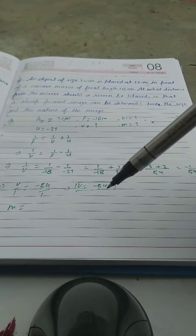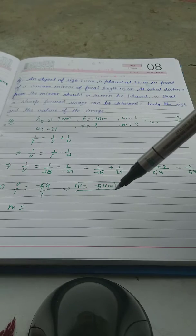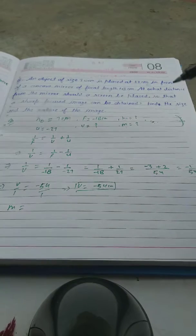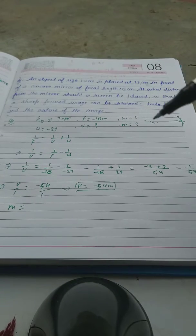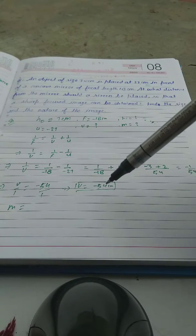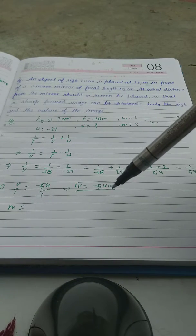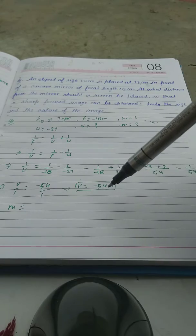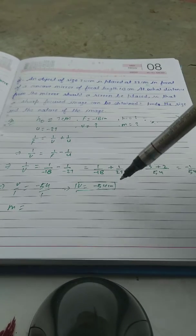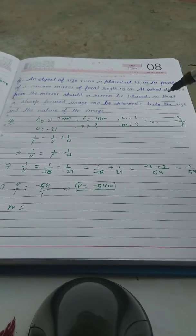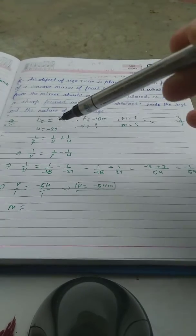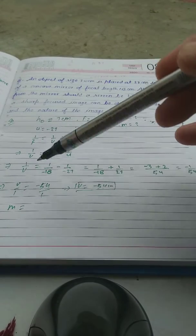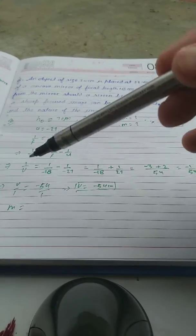The value of v comes out to be minus 54 centimeter. So we will place the screen 54 centimeter in front of the concave mirror.